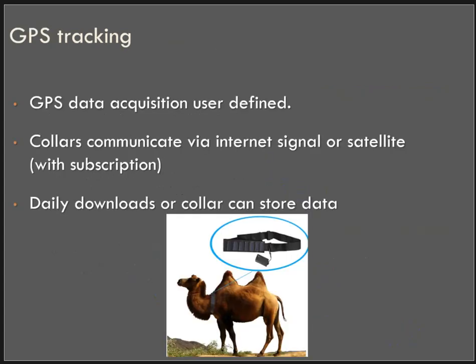GPS tracking is a lot more malleable and a lot faster, though it's also a lot more expensive. The collars communicate via internet or satellite and ping a location at any user-defined period of time. You then download the data periodically, or the collar can sometimes store a certain amount of data in it.